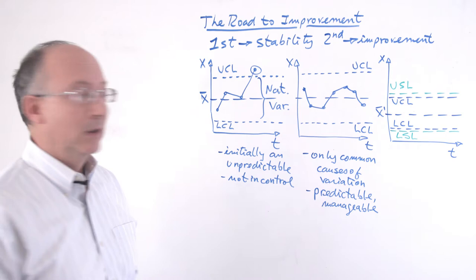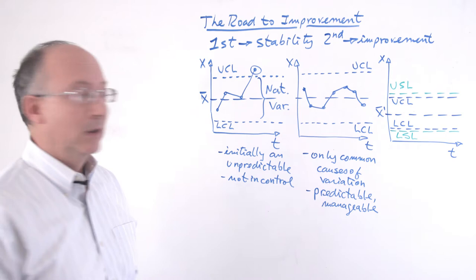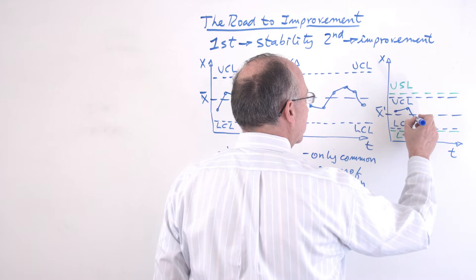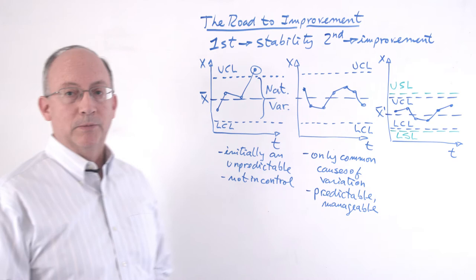In this case, if we maintain the predictability of the process and we work to lower the average, put the average where it needs to be, and also reduce the variation so that it meets the requirements of our customers, then we will have a process that is going to be both in control and also is going to be a capable process.